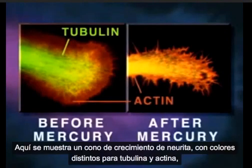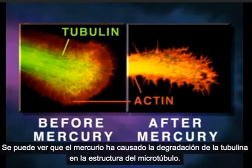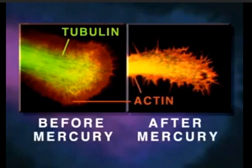Shown here is a neurite growth cone stained specifically for tubulin and actin, before and after mercury exposure. Note that the mercury has caused disintegration of tubulin microtubule structure.